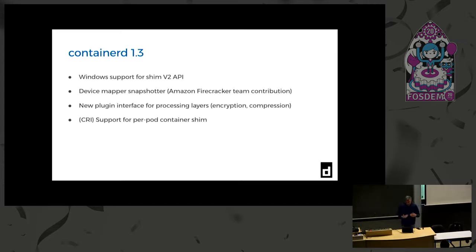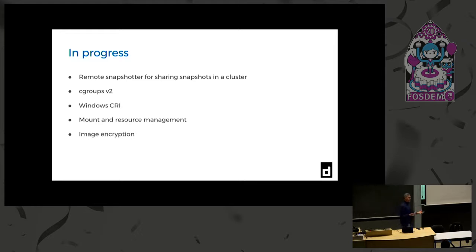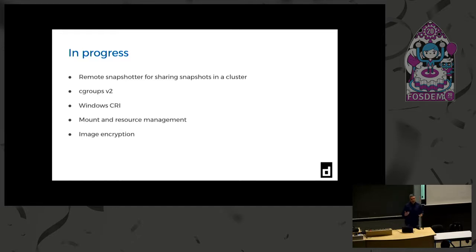For the CRI, we support per-pod container shims, so you're not starting a different shim for every container in the pod, giving memory and CPU usage improvements. Things in progress include remote snapshotters, cgroups v2 - there have been a ton of PRs and we're fairly close to having that complete - Windows CRI implementation, and image encryption.